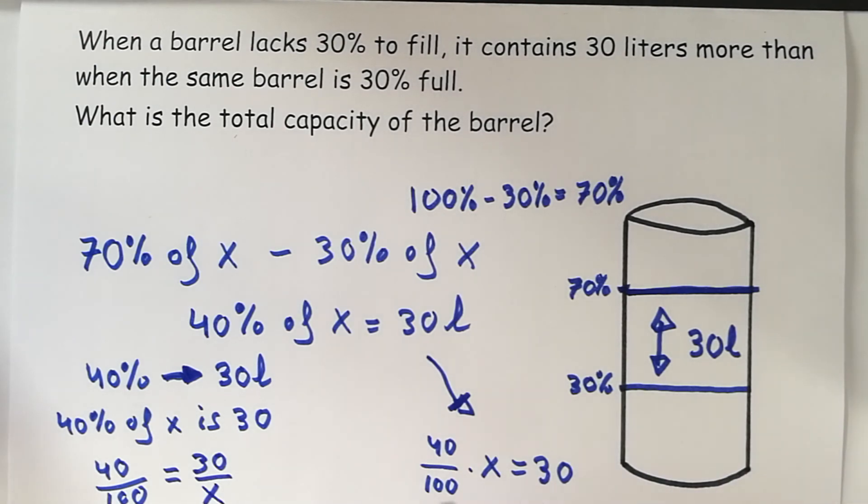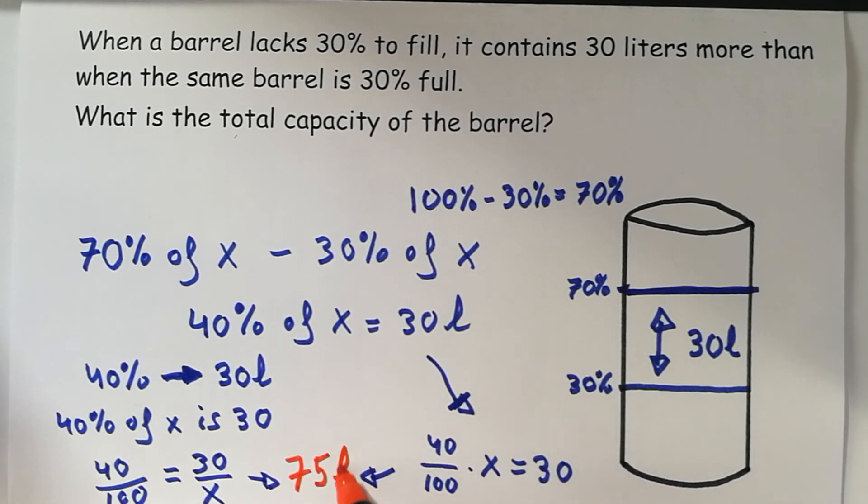The result is the same if we solve this proportion or if we write this equation. The result is always, for us, 75 liters.